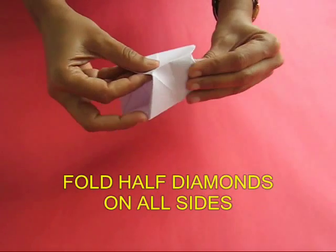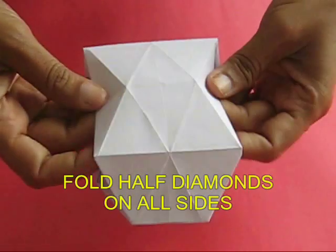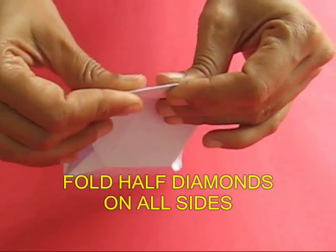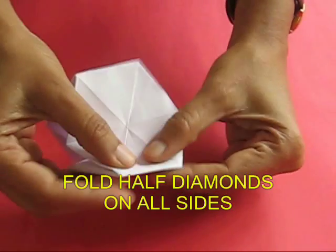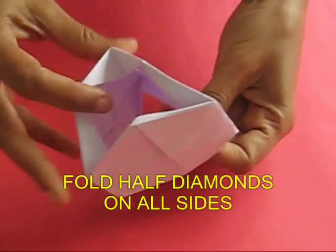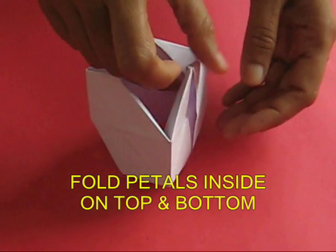Fold these half diamonds inside, first on the first section, then fold the half diamonds on the second one, and finally on the third one. Having folded the half diamonds, you will see a kind of a hexagonal shape with petals on the top and the bottom.